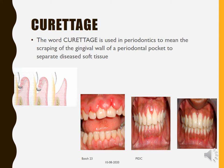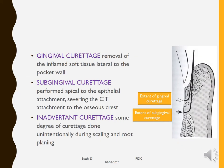The word 'curettage' is used in dentistry and periodontics to mean scraping out the gingival wall of the periodontal pocket to separate the diseased tissues out. Here you can see the gingival wall of the pocket being scraped out with the help of a curette. This procedure is termed curettage.